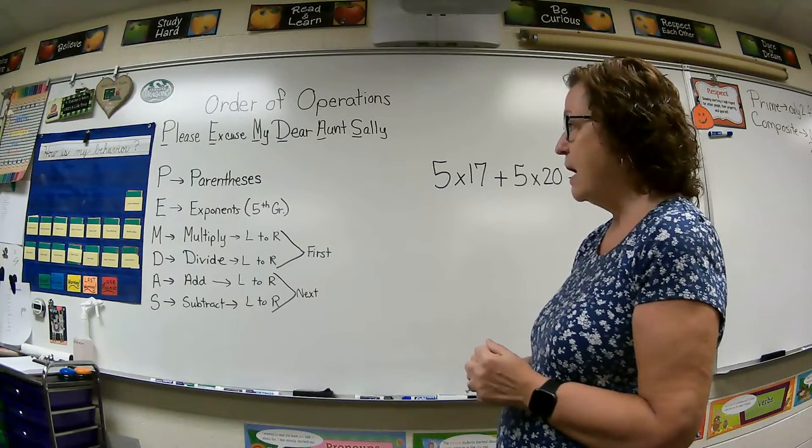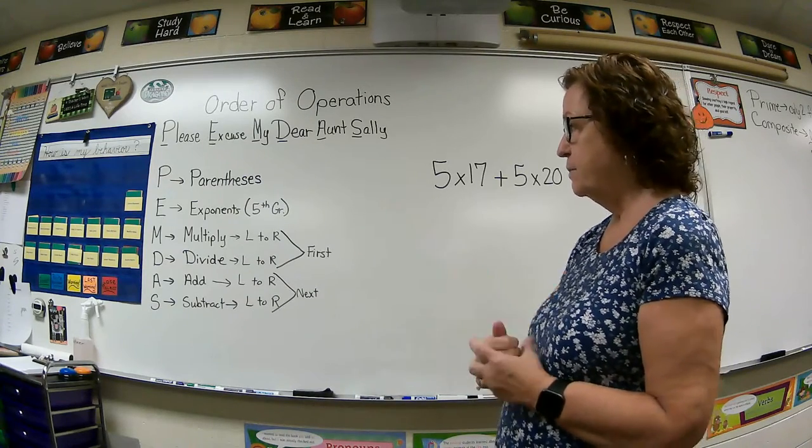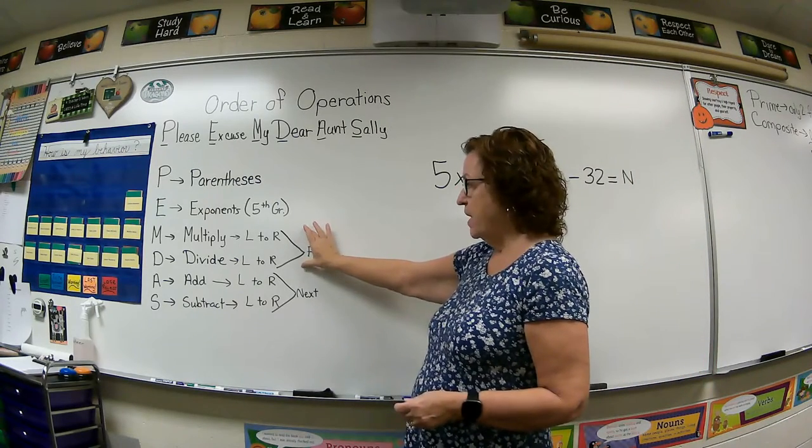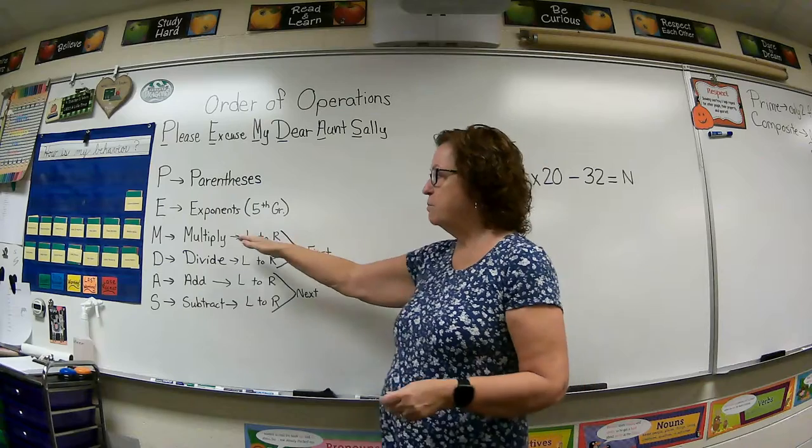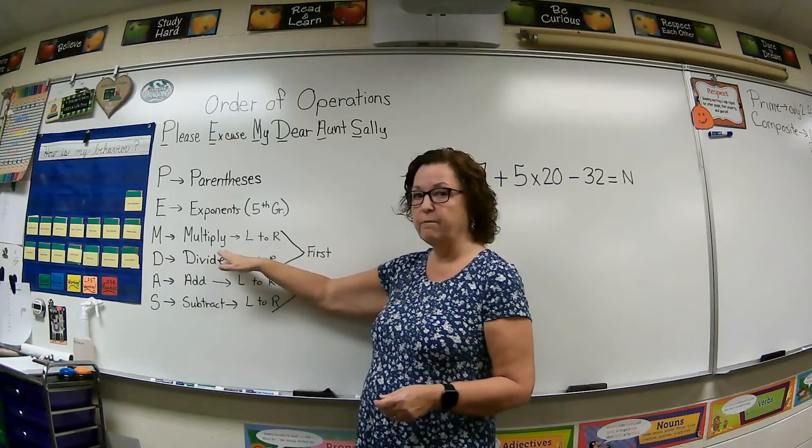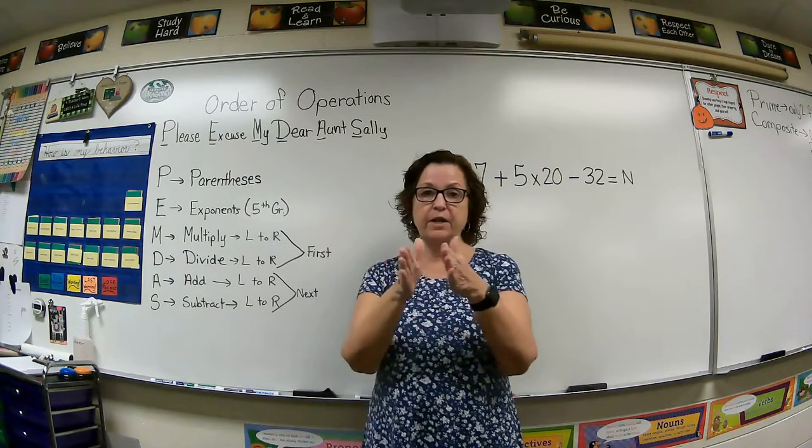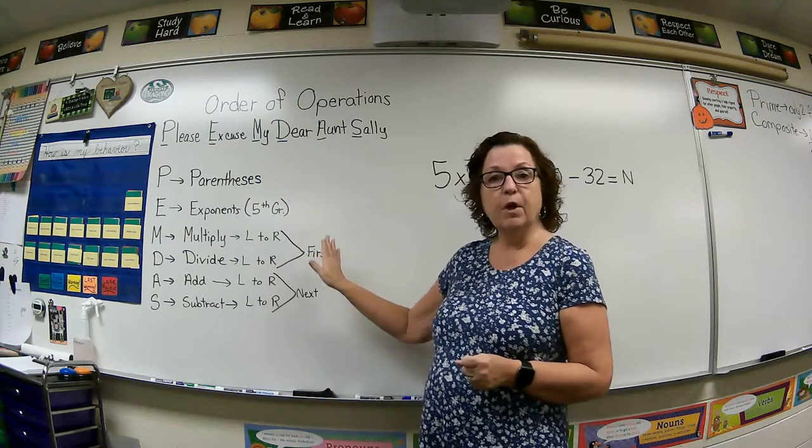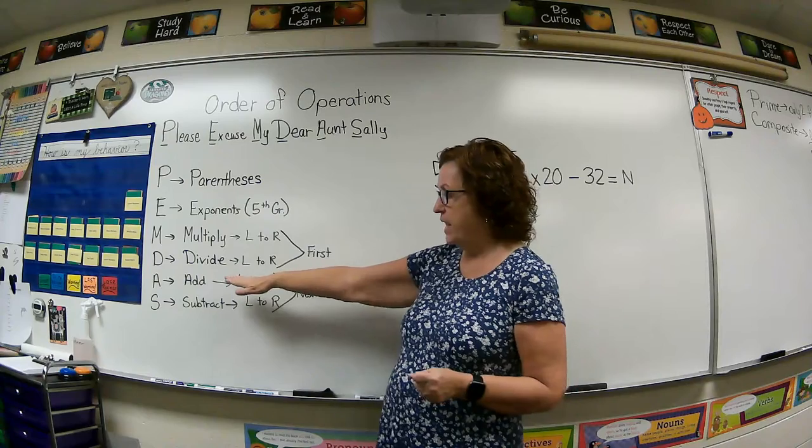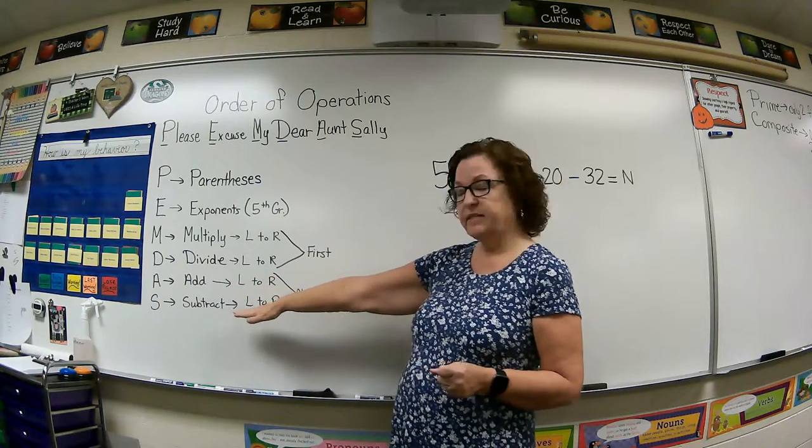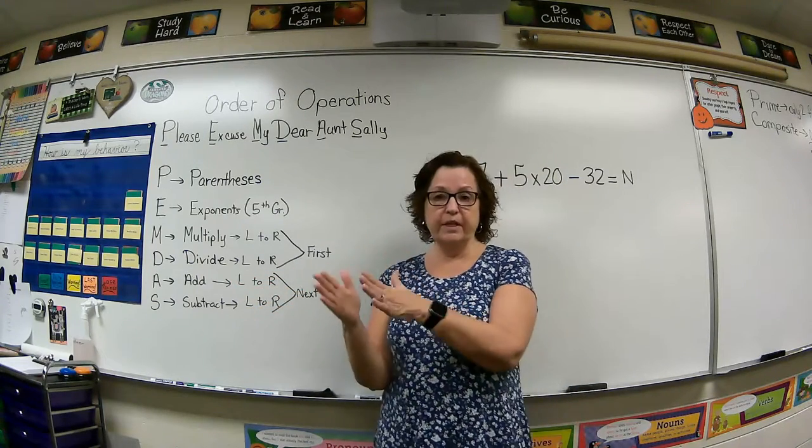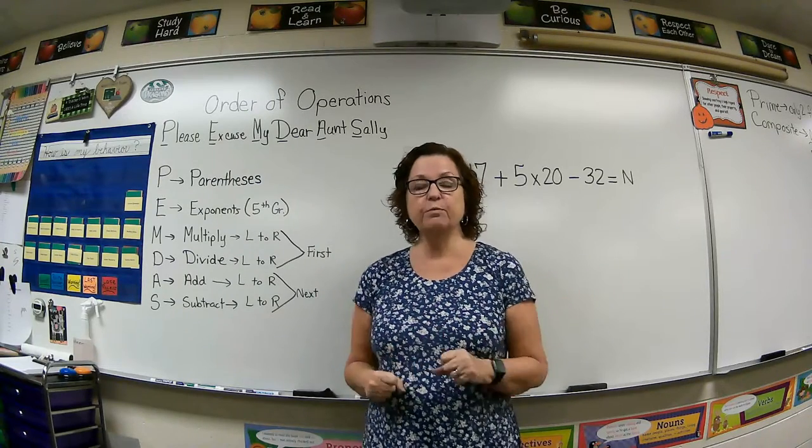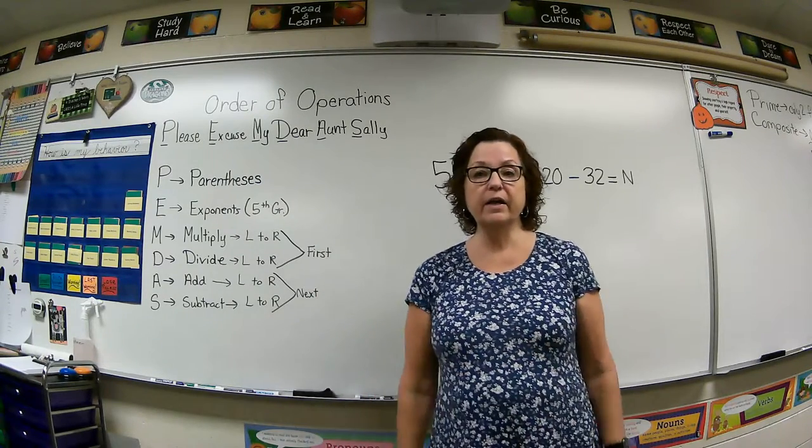And then we have M stands for multiply left to right, and D stands for divide. And these, you can either do multiply or divide left to right, whichever comes first as you go from left to right through your expression or your equation. And then after you do any multiplication or division, we have A that stands for add and S that stands for subtract. And you do this left to right, add or subtract in the order that they come in the expression or in the equation.